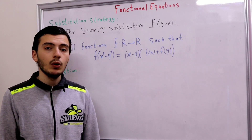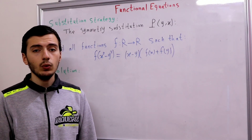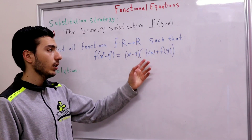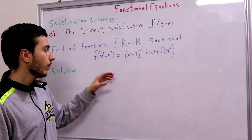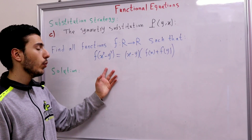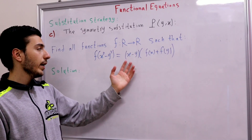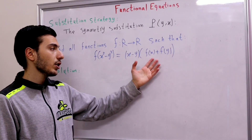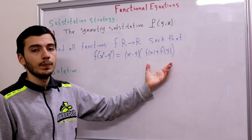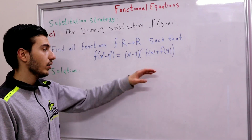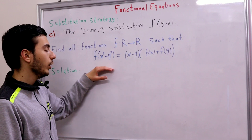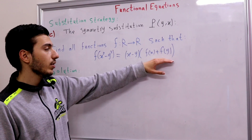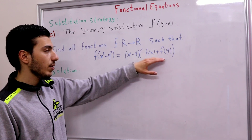In this problem we're asked to find all functions f from ℝ to ℝ such that f(x² - y²) = (x - y)(f(x) + f(y)). If we take a look at our functional equation, we can realize that here we have a symmetry.